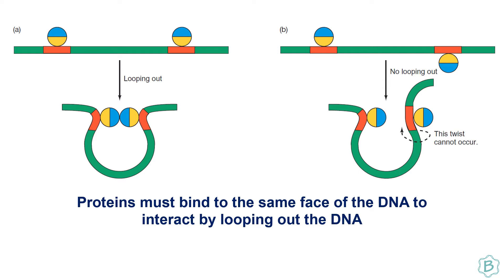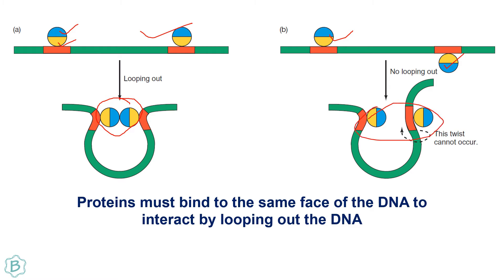This example shows that if a protein contains a protein-binding domain and a DNA-binding domain, and both proteins bind to the same face of the DNA, the two proteins can interact with each other through DNA looping. However, if two proteins bind to opposite faces of the DNA, looping occurs but the two proteins cannot interact with each other. This principle is utilized by the arabinose operon.